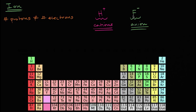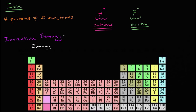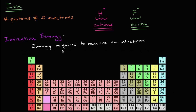With that out of the way, let's think about how hard it will be to ionize different elements in the periodic table — in particular, how hard it is to turn them into cations. To think about that, we'll introduce an idea called ionization energy. Ionization energy is defined as the energy required to remove an electron. It could have even been called cationization energy, because really it's the energy required to remove an electron and make the overall atom more positive.